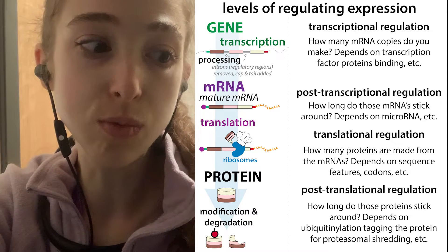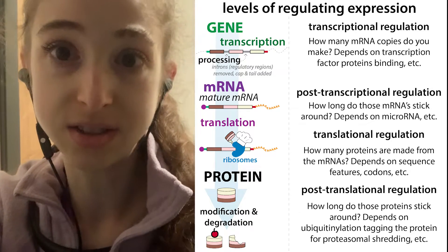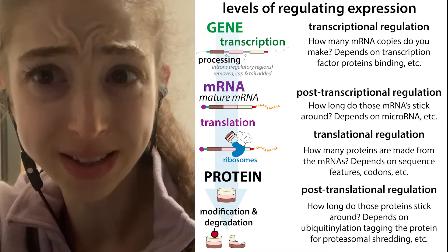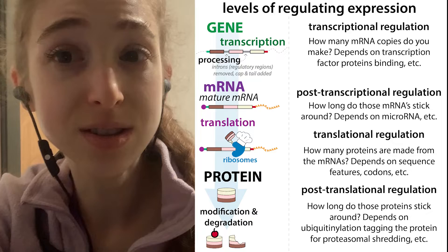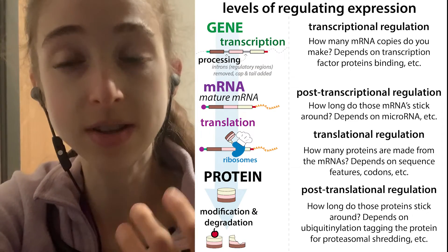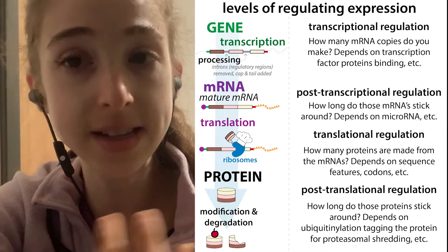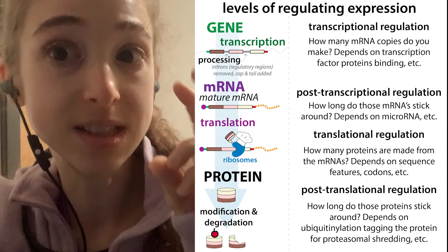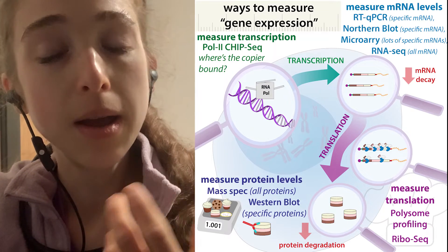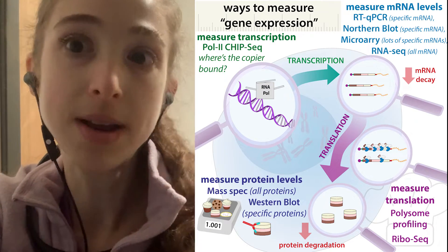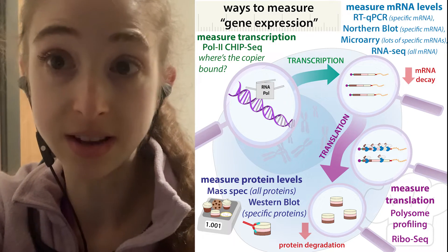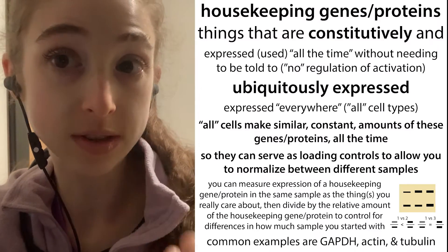Just like you wouldn't buy snow boots in the summer, your cells don't need the same things all the time. So your cells control the levels of various things that are made — they control the expression of those genes, how much they're being used. We can then measure the amounts of the differences in order to see what the cells are up to, so we see that those sorts of genes are differentially expressed.